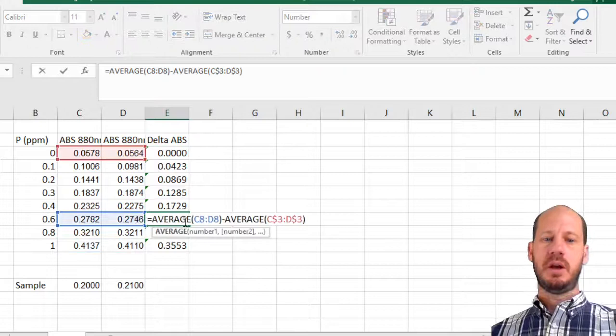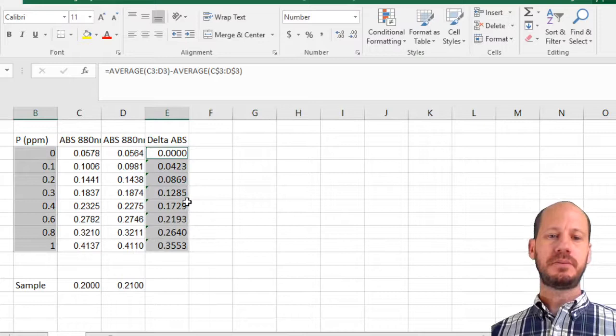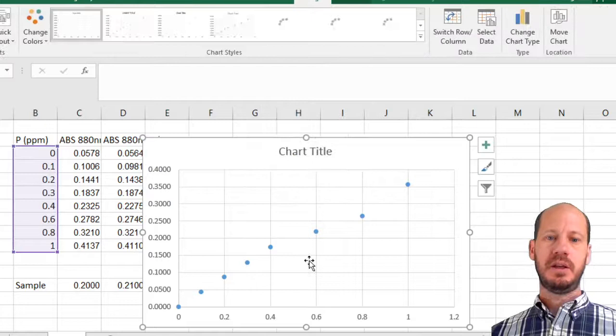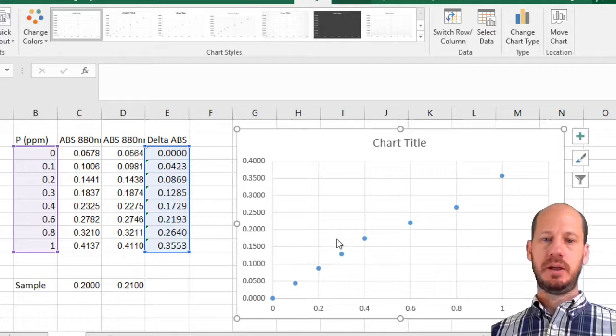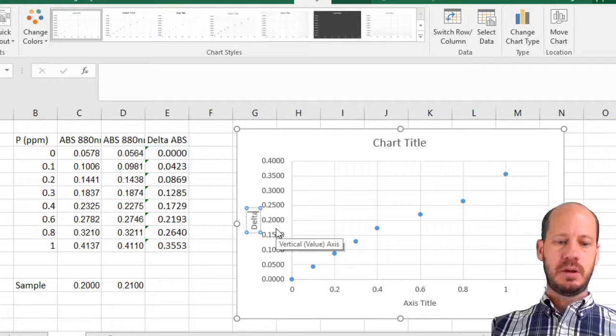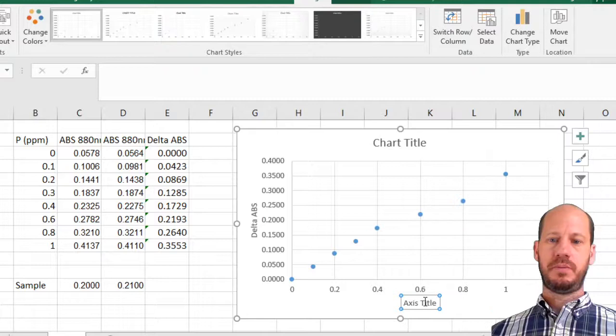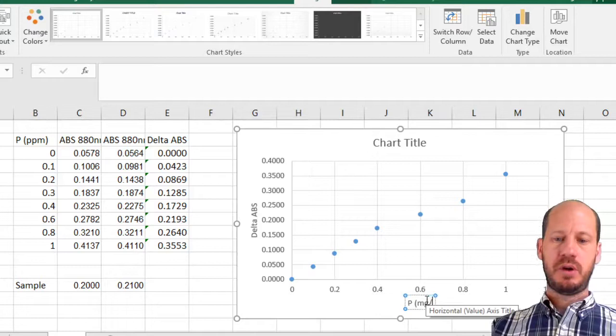If you drag it, you'll see that it's already subtracting always the zero, subtracting the blank. Every concentration is subtracting the blank. We're going to make a scatter plot between the concentration in ppm and the delta absorbance. You go insert a scatter plot. This is our standard curve from the data we got. Let's label things properly. The y-axis is delta absorbance. The x-axis is P concentration in ppm or milligrams per liter.